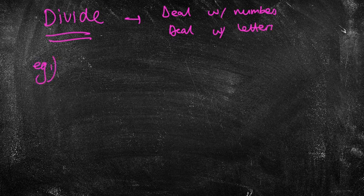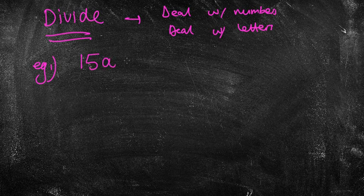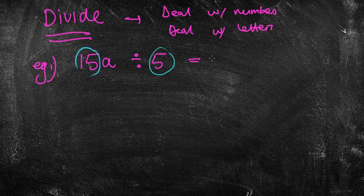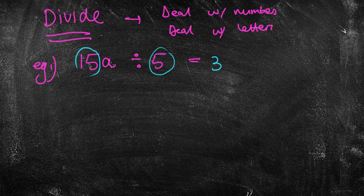So example 1, if I had let's say 15a divided by 5. Well just like the numbers, I'm going to deal with the numbers first. 15 divided by 5 equals 3. And then I've just got a. And that's all I've got. So it's just 3a.